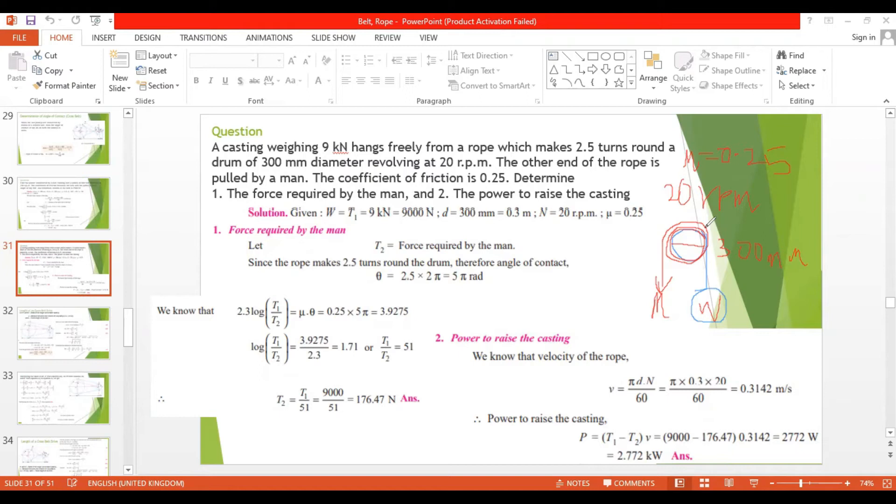First to hold this one at this position, next to pull it to the top. First we will find the force required by the man. According to given data, the casting weight is 9 kilonewtons, that is 9000 newtons, mu is 0.25, diameter is 0.3 meter, n is 20 rpm. We will put this as T2, the force required by the man, and T1 is the weight of the hanging.